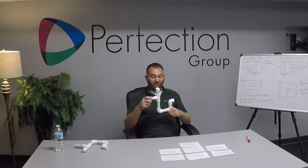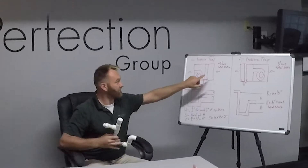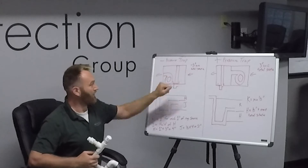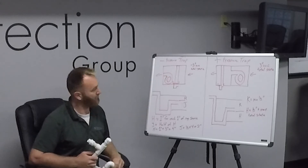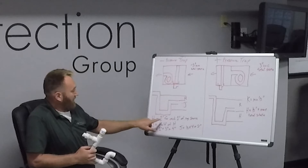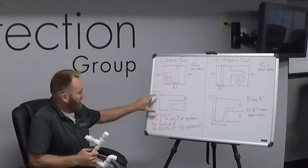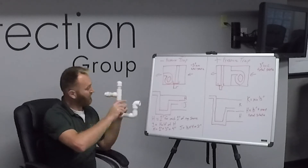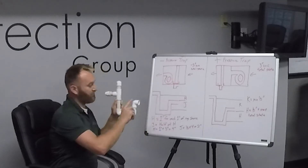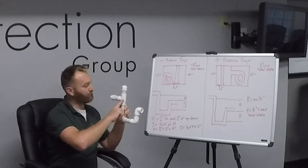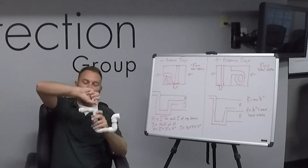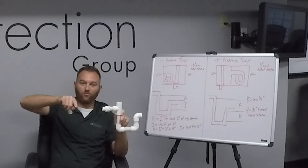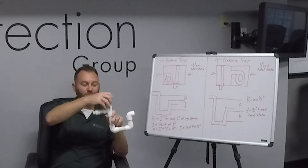For a negative pressure trap, the first thing you need to do is measure your total static pressure of your system, or if it's designated by your engineering group. In our application today we have minus three inches of water column. Using our formula — which is one inch of height for each inch of negative static pressure — our trap must be four inches tall, and then the outlet will be one half of your inlet side. You also need a cap on your clean out section so that air doesn't get drawn into the air handler and cause a problem with your trap.